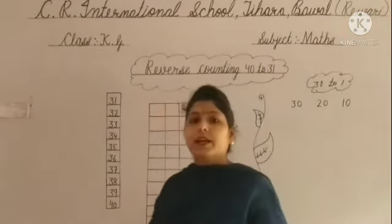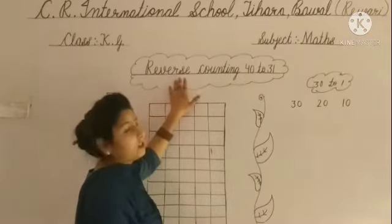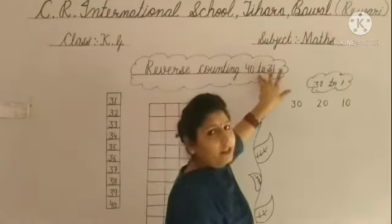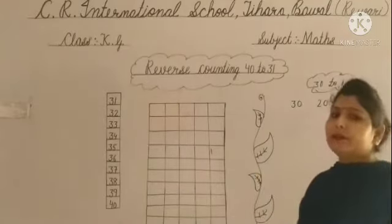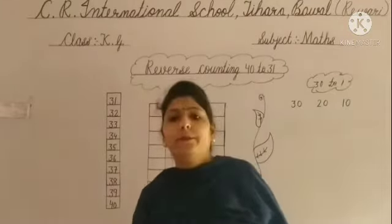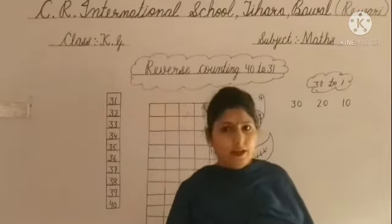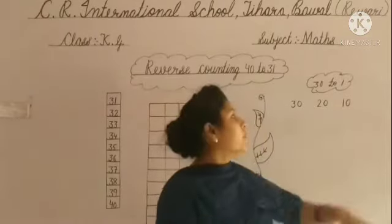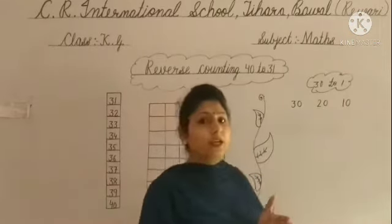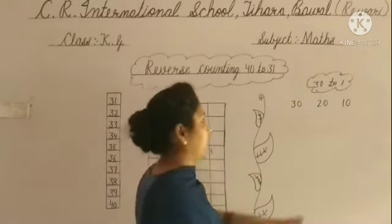आज हम work करेंगे maths की notebook में. आज की बात है reverse counting 42 to 31. Last video में हमने 32 to 21 की counting की थी, और फिर आपने 32 to 1 की reverse counting का assignment भी किया. तो हम एक बार repeat करते हैं 32 to 1 की reverse counting. After then हम 49 to 31 की counting करेंगे.